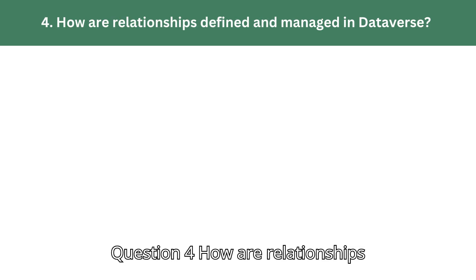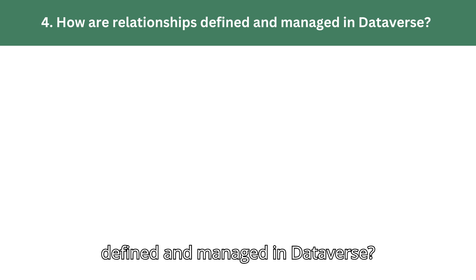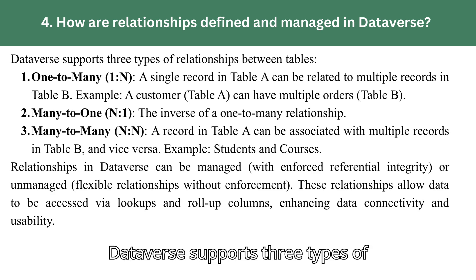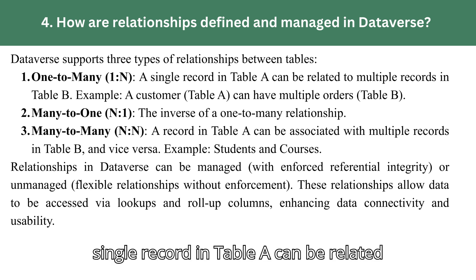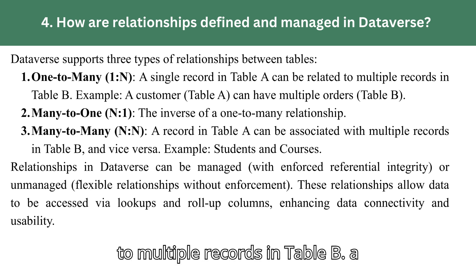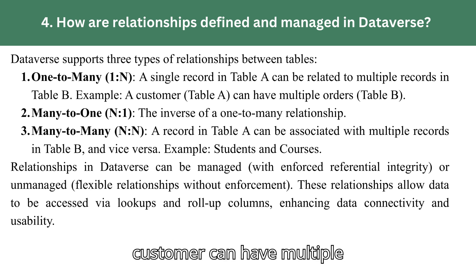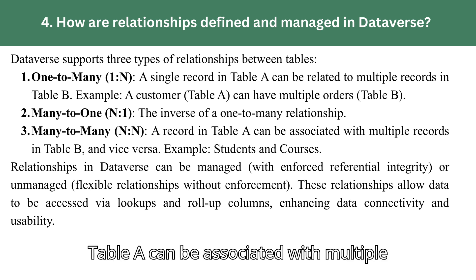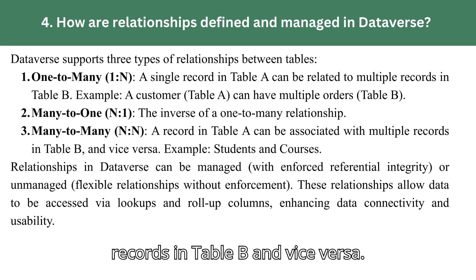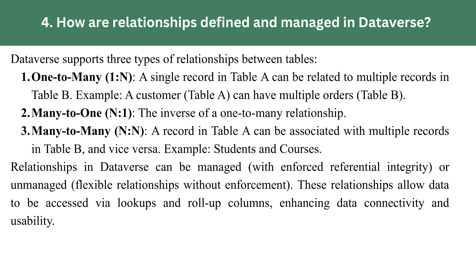Question 4: How are relationships defined and managed in Dataverse? Dataverse supports three types of relationships between tables. One-to-many: a single record in Table A can be related to multiple records in Table B — for example, a customer (Table A) can have multiple orders (Table B). Many-to-one: the inverse of a one-to-many relationship. Many-to-many: a record in Table A can be associated with multiple records in Table B and vice versa.